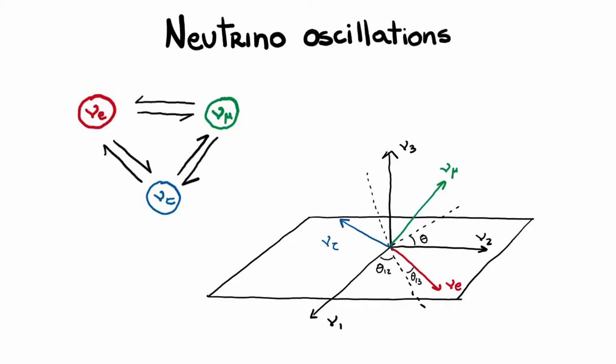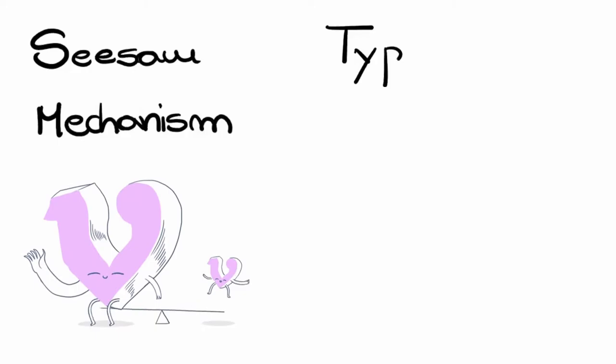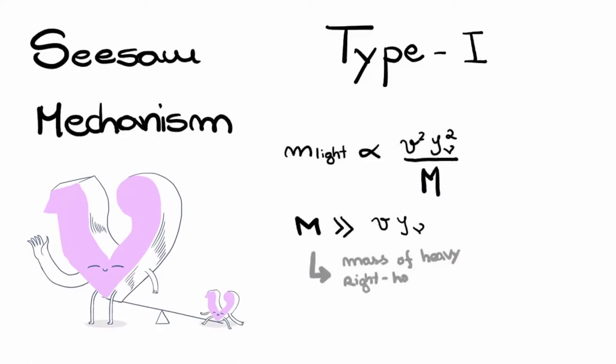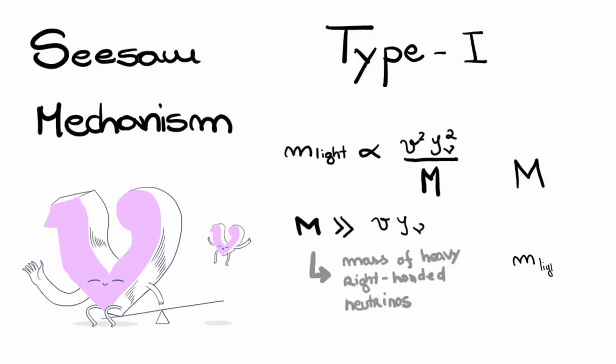of neutrino states with definite flavor: electron, muon, and tau neutrinos. One of several mechanisms proposed to explain why neutrino masses happen to be so small when compared to other particles is the seesaw mechanism of type 1, where we introduce the missing heavy right-handed neutrinos, which will suppress the mass of the light neutrinos. In other words, the larger the mass of the new heavy particles, the smaller is the mass of the light ones.